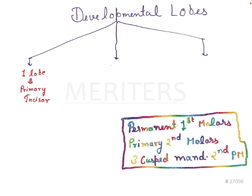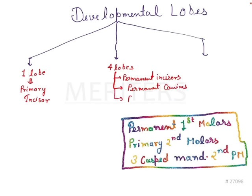Now if I modify this question to ask the minimum number of lobes required for formation of a permanent tooth, the answer will be four lobes. The permanent teeth which arise from four lobes include permanent incisors, permanent canines, and all premolars — with one exception I'll mark with a star for now — and all other permanent molars, which I'll explain when we reach the five lobes section.